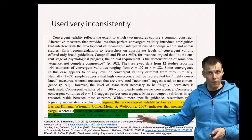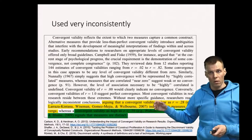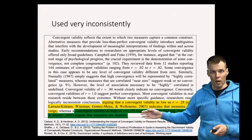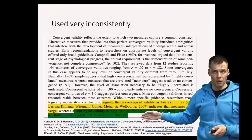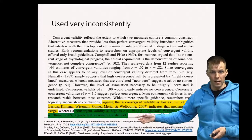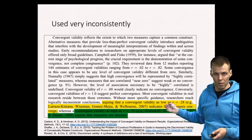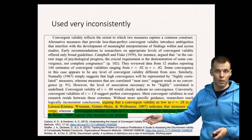You have to have an interpretation for the statistic. For composite reliability or alpha you have an interpretation — it's the reliability of a sum of indicators. For correlations between indicators, it's very difficult to interpret them directly.